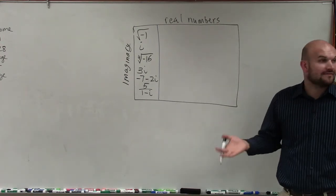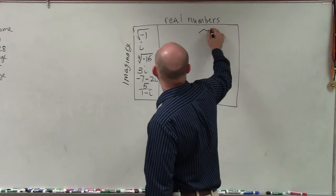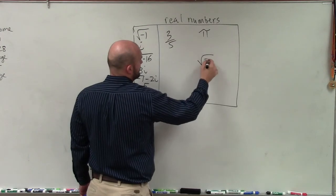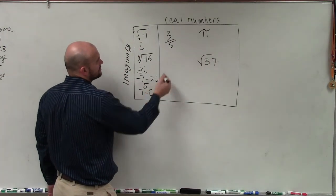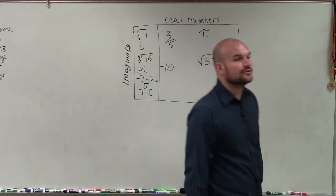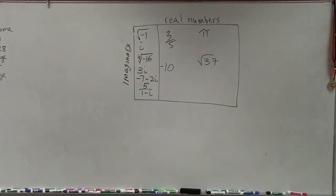Then real numbers are obviously going to be all other sorts of numbers. So we can have π, 3 fifths, square root of 37, 10, or negative 10. Those are all examples of real numbers. OK? All right. So that was one basic definition.